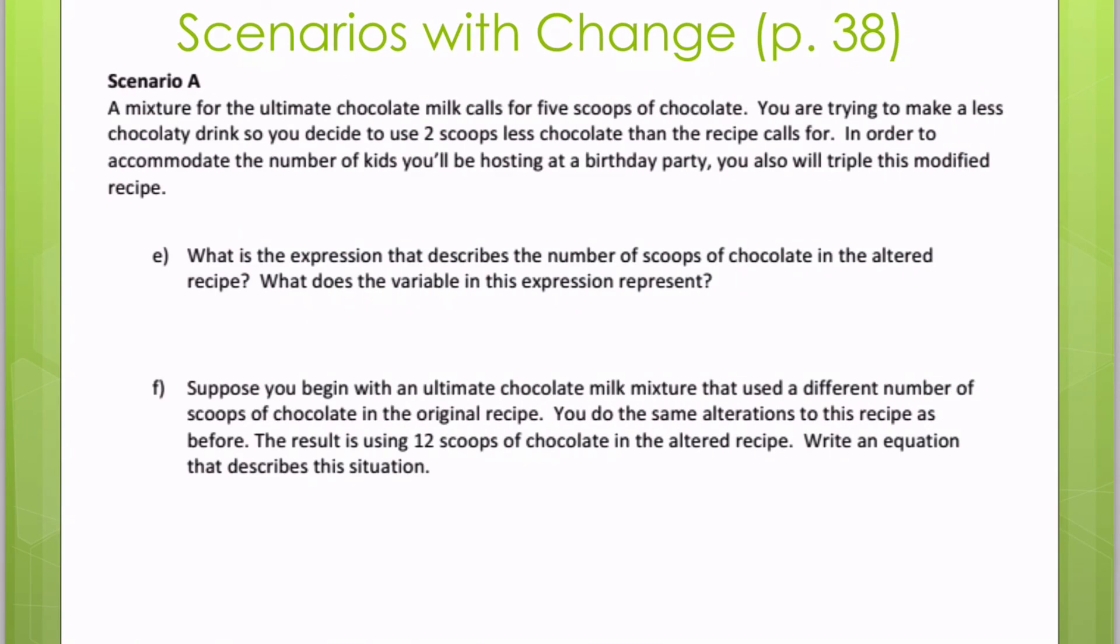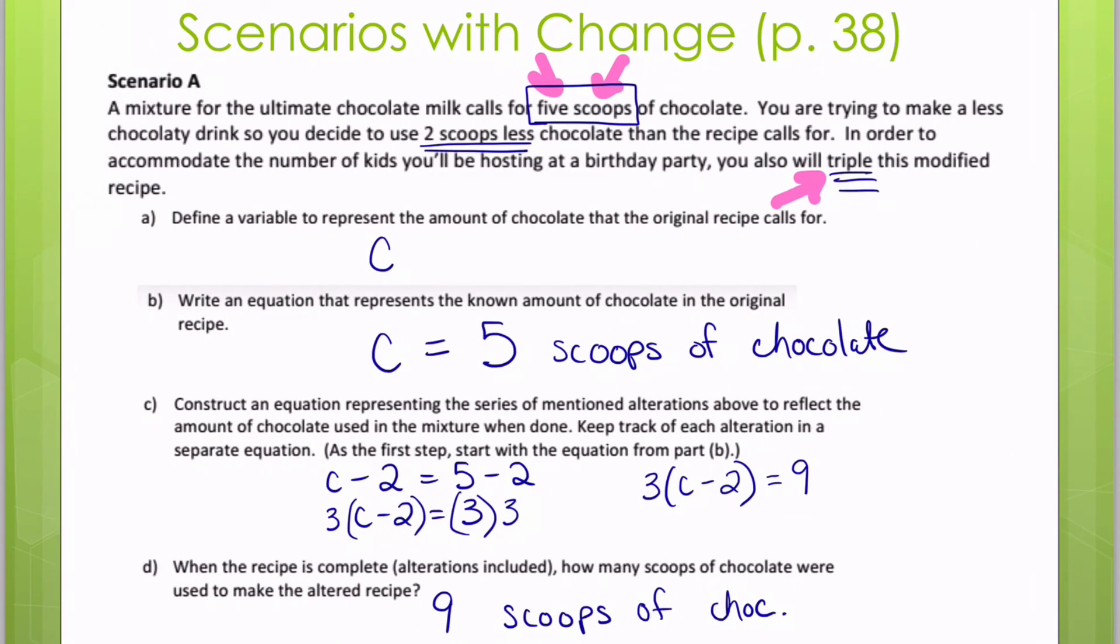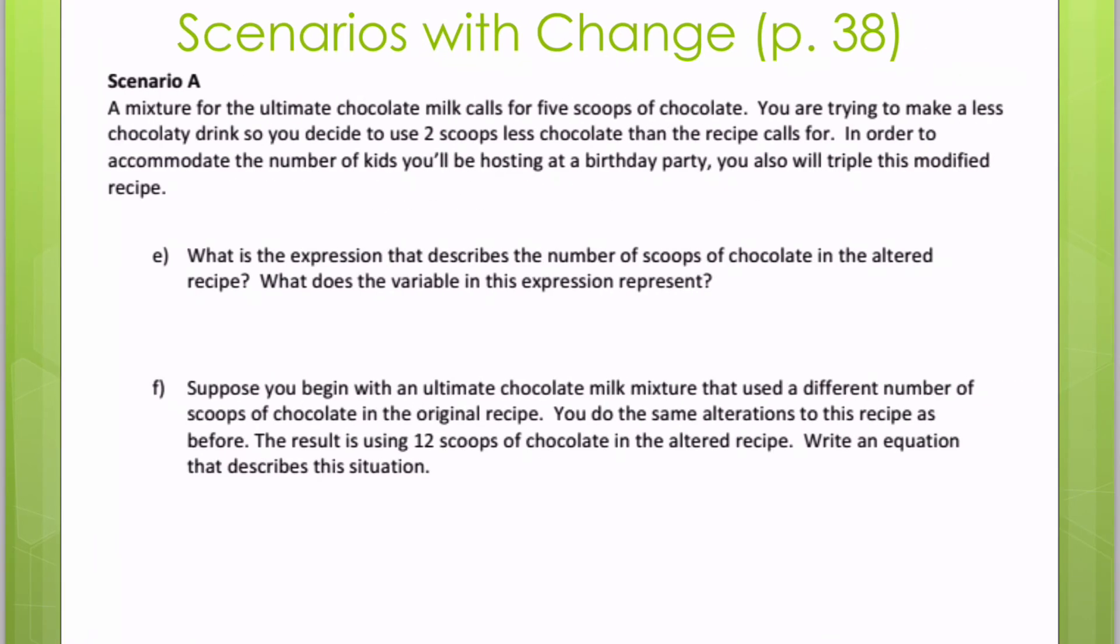Now it says, what's the expression that describes the number of scoops of chocolate in the altered recipe? This is just going to be our expression on this side of the equation. So that three times the quantity of C minus two. That's the expression. And remember, expression, we are not using an equal sign.